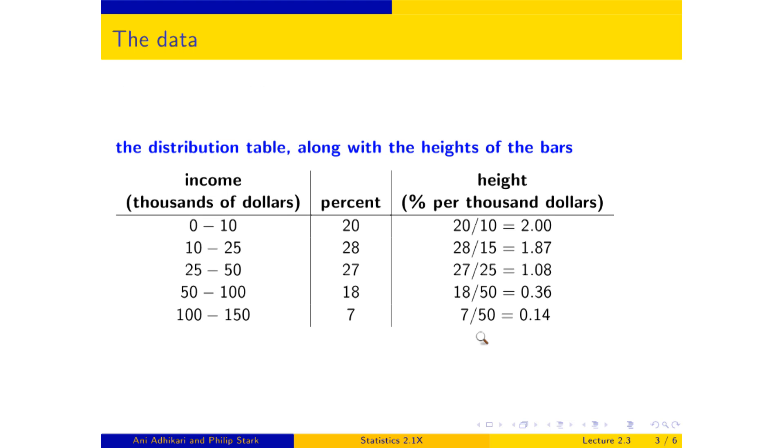Here's the table again, and here is confirmation of what we were seeing. The second bar has 28% of the people. The first bar has 20%, the second bar just has more people. Percents are represented by area, so it has bigger area. The first bar is taller, 2 versus 1.87. So in that case, what is height measuring?